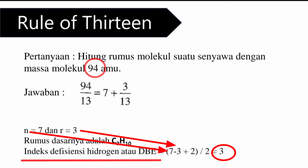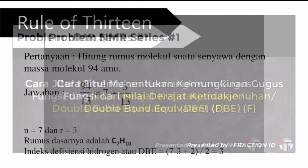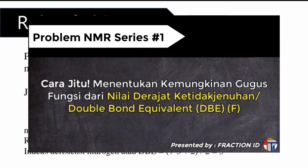Untuk nilai double bond equivalent atau DBE seperti 1, 2, 3, 4, 5, dan lain-lainnya, teman-teman bisa menonton video problem NMR yang pertama yang menghitung jumlah ikatan rangkap atau ketidakjenuhan di H-NMR, agar tahu kemungkinannya kalau misalnya DBE sama dengan 1, 2, dan yang lain-lainnya.